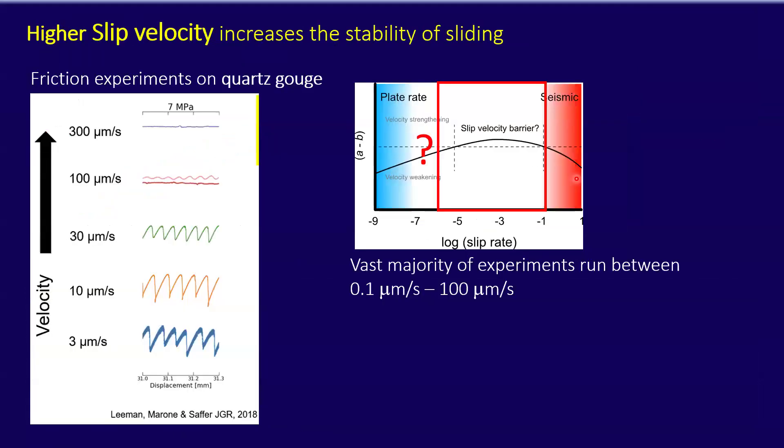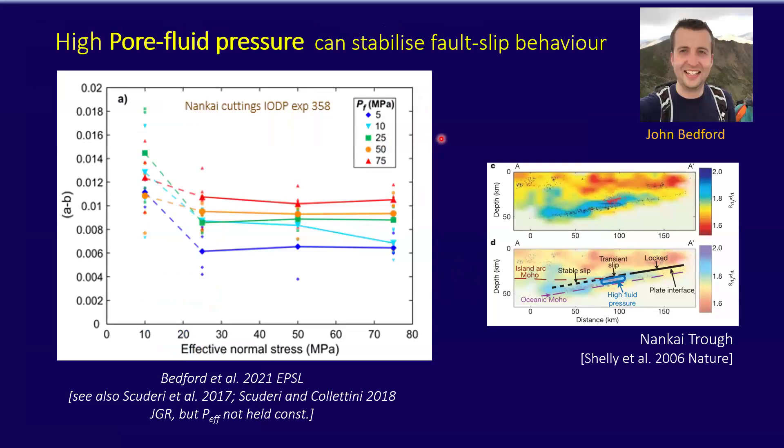So the next part is the slip velocity. Slip velocity is another important parameter. As you can see, the increase in slip velocity tends to stabilize the fault. This work from Lehner, Marone, and Saffer. So this means that the transition from slow to high slip velocity, at a certain point we could have like a cutoff of slip velocity that damps the slip instability and turns it into a slow slip event. So we don't know, because most of the experiments are run at this range, and we need to know this range.